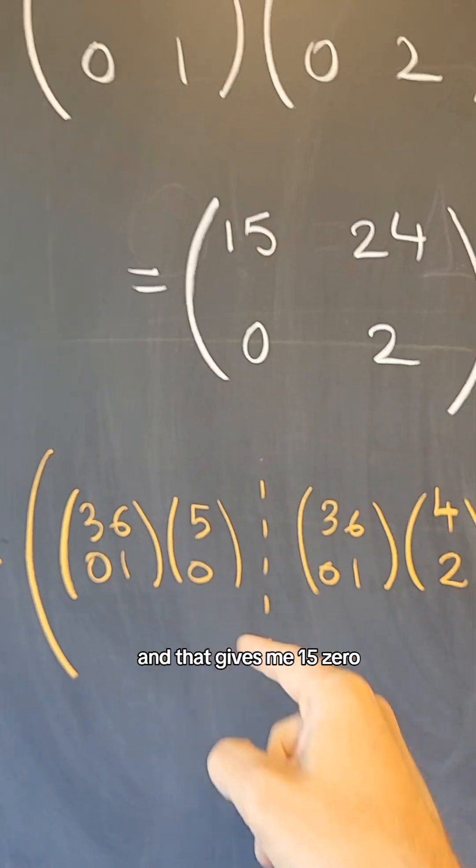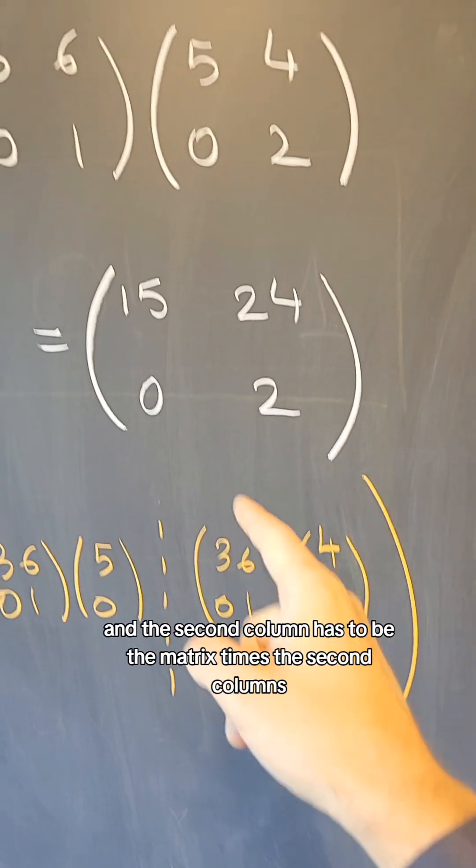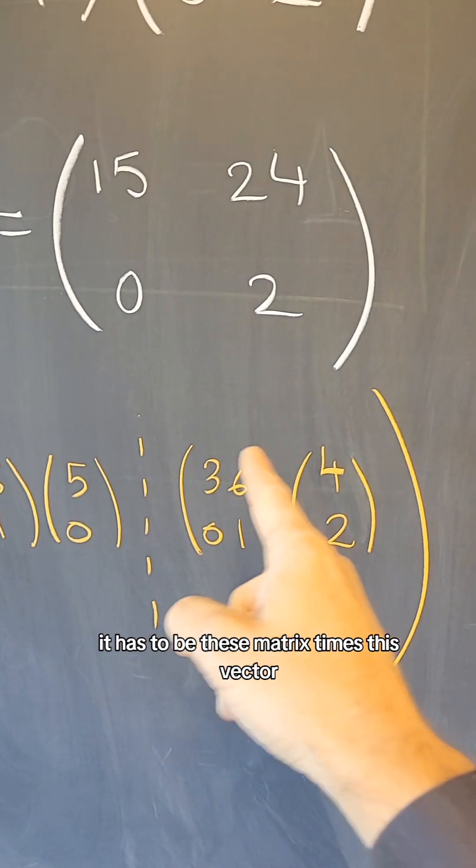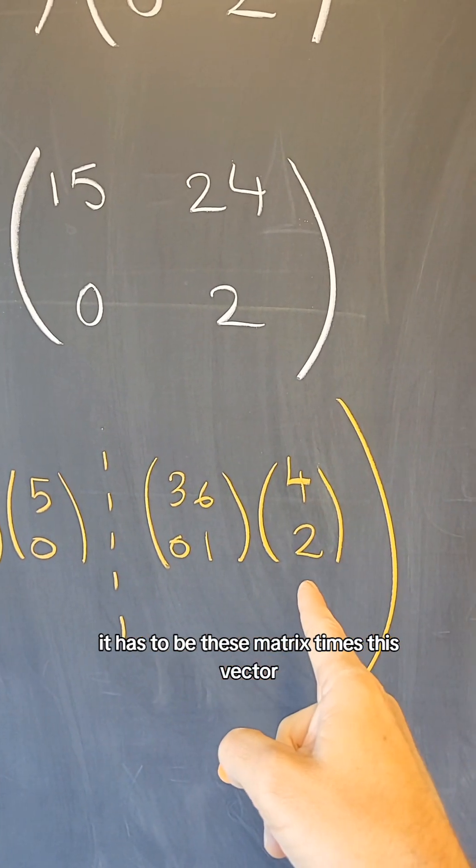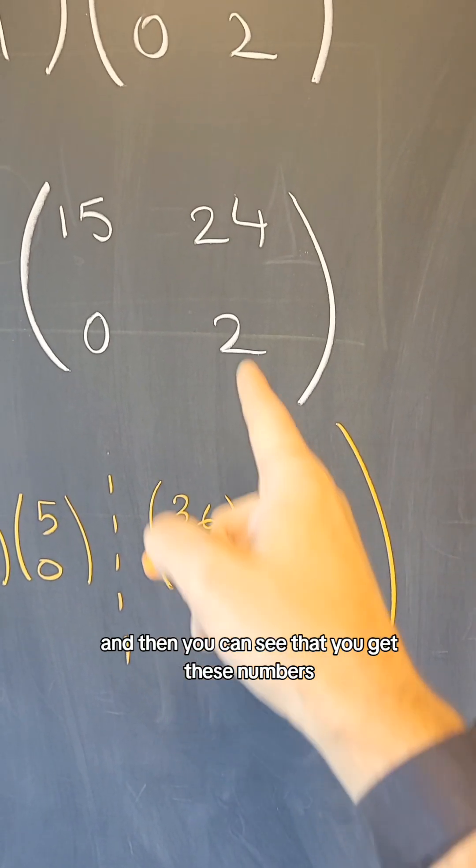and that gives me (15, 0), and the second column has to be the matrix times the second column, so it has to be this matrix times this vector, and then you can see that you get these numbers.